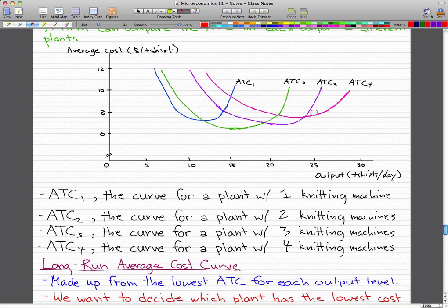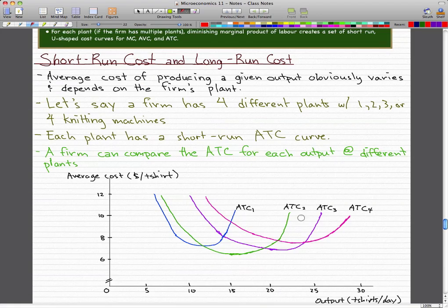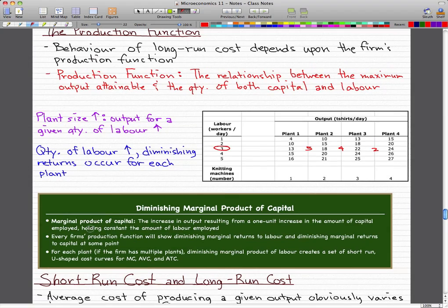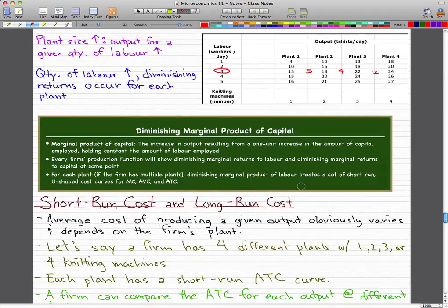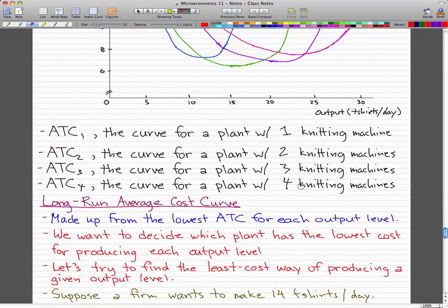So that's what we found out. These are our average total cost curves for the various knitting machines that we could have. So from this, we can make a long-run average cost curve.